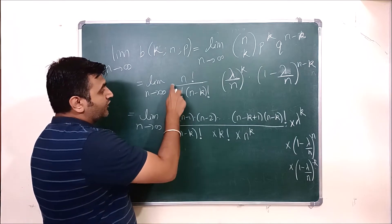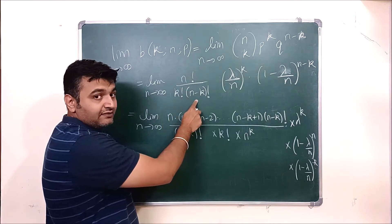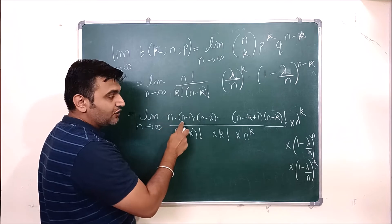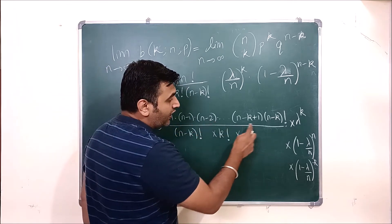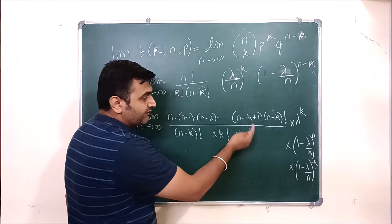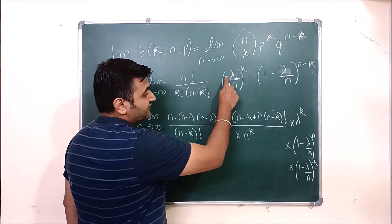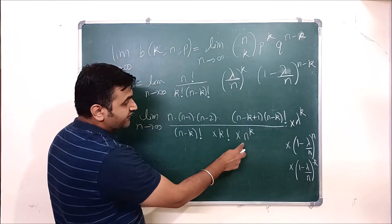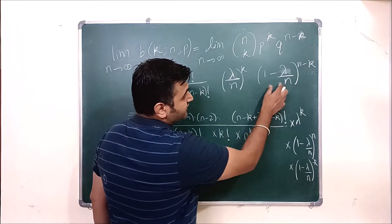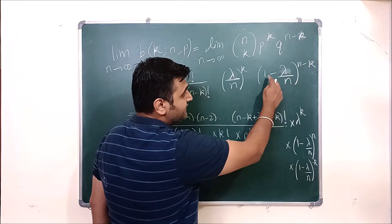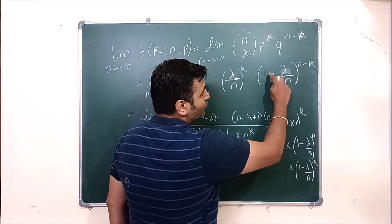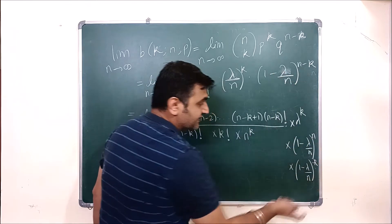Now we want to cancel the (n minus k) factorial. So we write n factorial as n times (n minus 1) times (n minus 2), continuing down to (n minus k plus 1), times (n minus k) factorial. This gives us lambda raised to k in the numerator and n raised to k in the denominator and k factorial. We then split by the law of indices: 1 minus lambda over n, raised to n, times 1 minus lambda over n, raised to minus k.